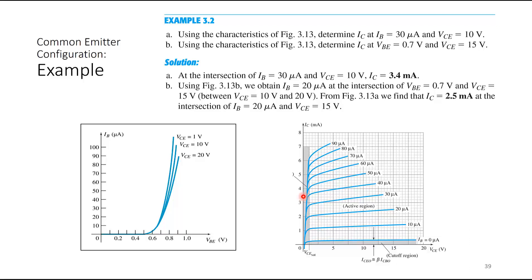In the second example, we determine IC given VBE and VCE rather than IB directly. First, use the input characteristics: if VBE is 0.7V, IB is found to be about 20 microamps. Then, using the output characteristics with IB = 20 microamps and VCE = 15 volts, the value of IC is about 2.5 milliamps. With a proper graph you can magnify and find values more accurately.